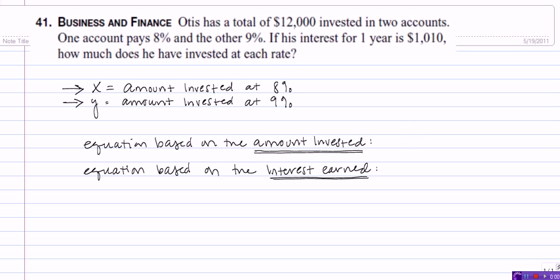If I take the amount that he invested at 8% and add the amount that he invested at 9%, that should equal the total amount that he invested, which was $12,000. So the first equation is X plus Y equals $12,000.